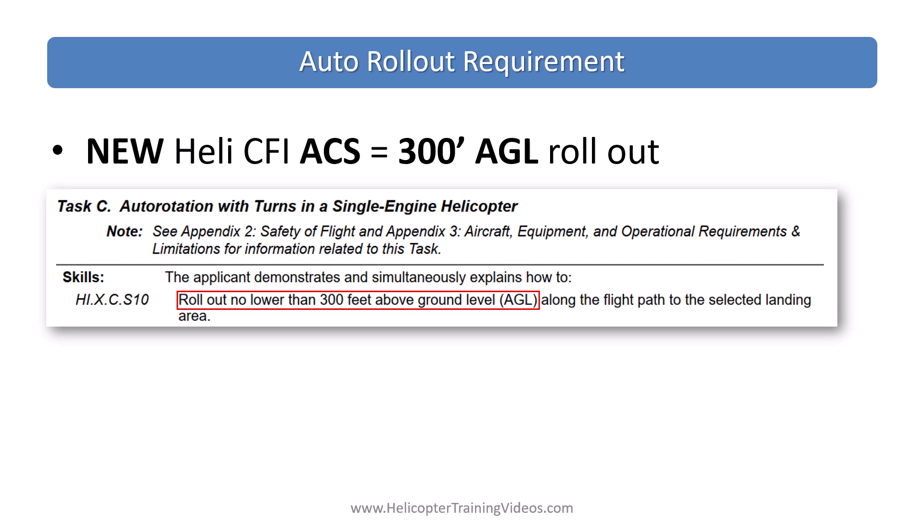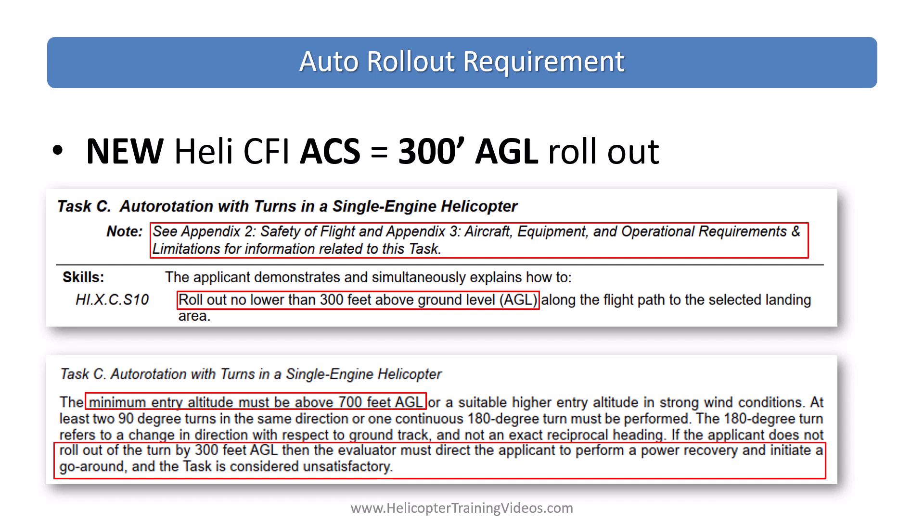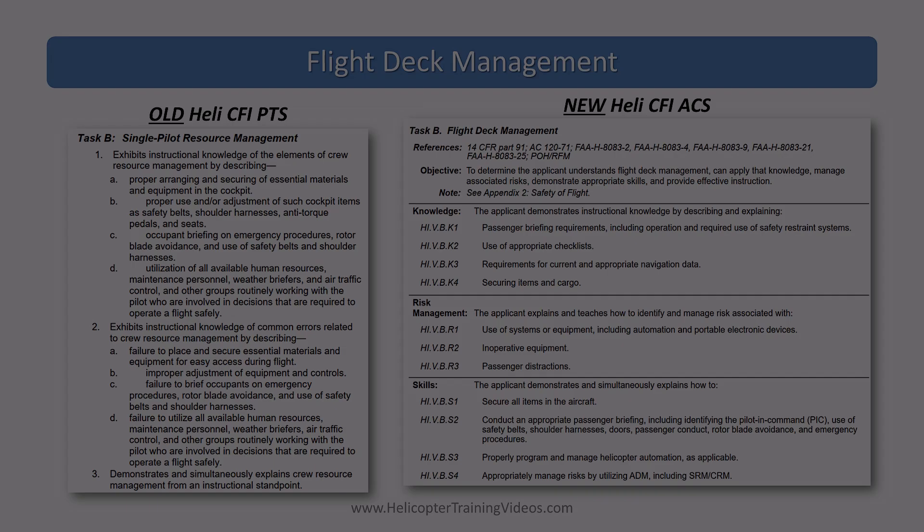We also have the autorotation rollout requirement, the same as in private and commercial. This has been added to make sure that rollouts are complete no lower than 300 feet above the ground when doing autorotations with turns — this is obviously going to increase safety. It means that altitudes for entry are also probably going to be higher, but in my opinion it makes the whole maneuver a little bit easier since you have more time to make adjustments to hit your spot. References to Appendix 2 and 3 indicate a minimum entry altitude of at least 700 feet. If the rollout isn't complete by 300 feet, the evaluator will direct the applicant to perform a power recovery go-around and the task will be considered unsat — so there's no squeezing in a turn below 300 feet.